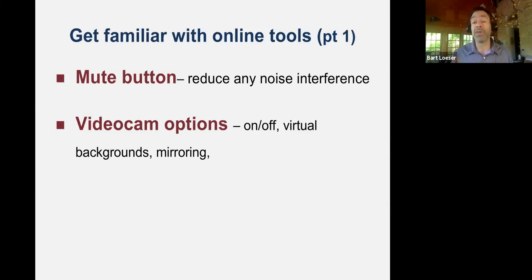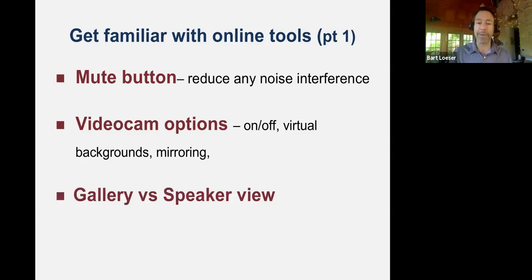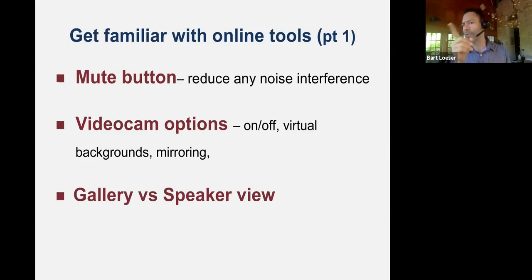Another video option is mirroring — if you have any script or text you want to show, make sure you don't display it backward like in a mirror, so use the mirroring process to turn the letters around. Ideally, use gallery view when you want to see everybody, but if you want to see the speaker as the primary picture, put it on speaker view. You'll see a strip of a few other people, and you can move through the strip to see who else is in the meeting.